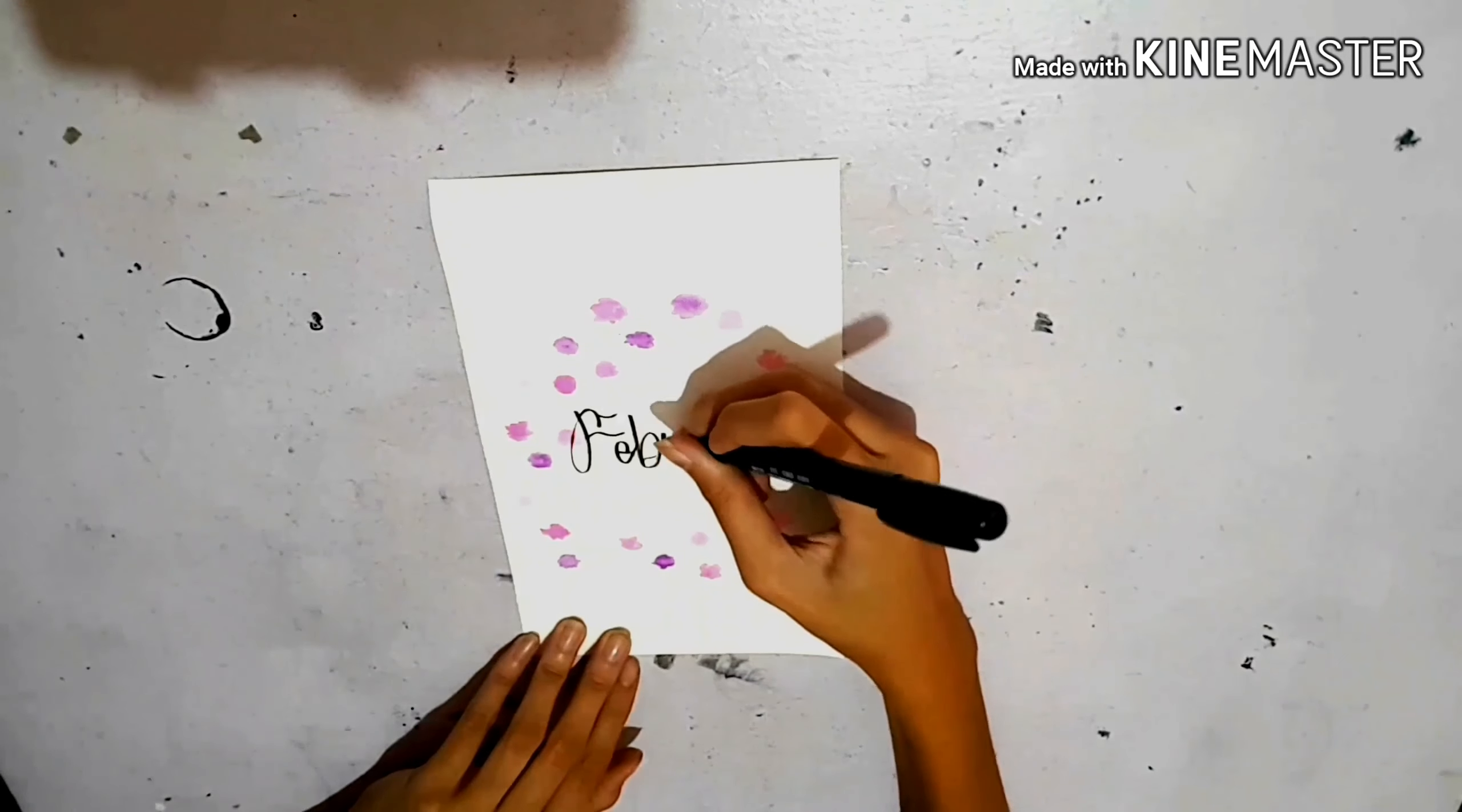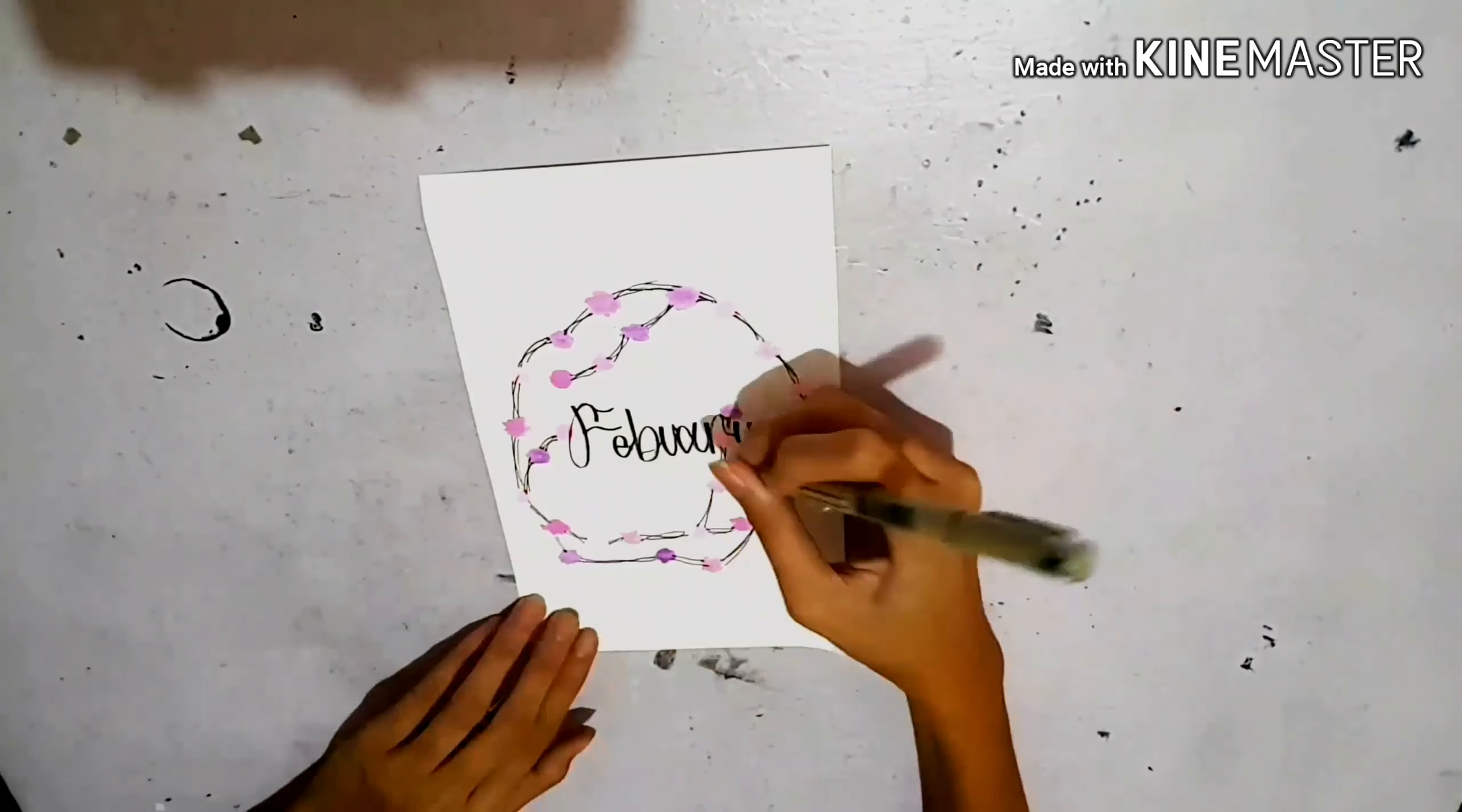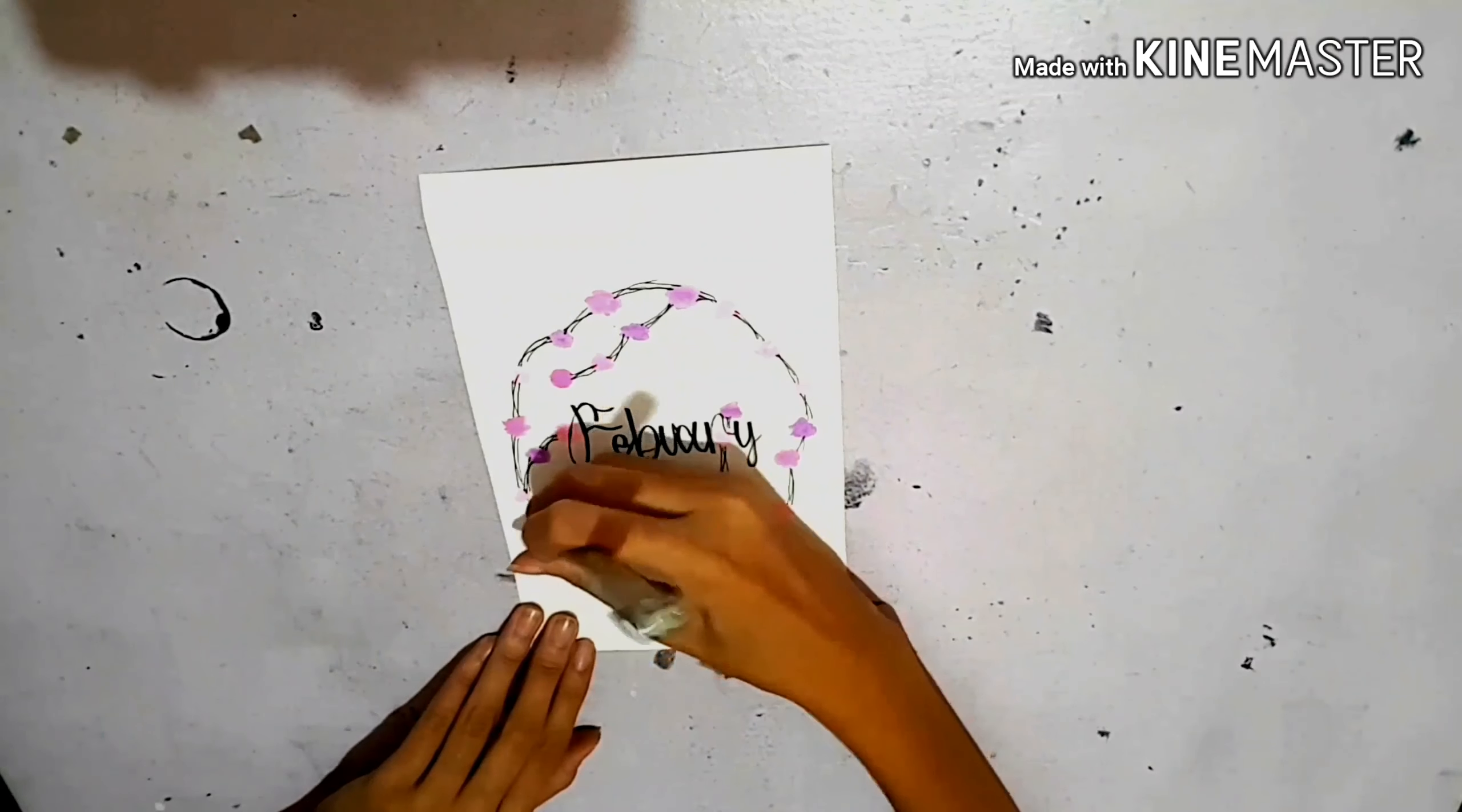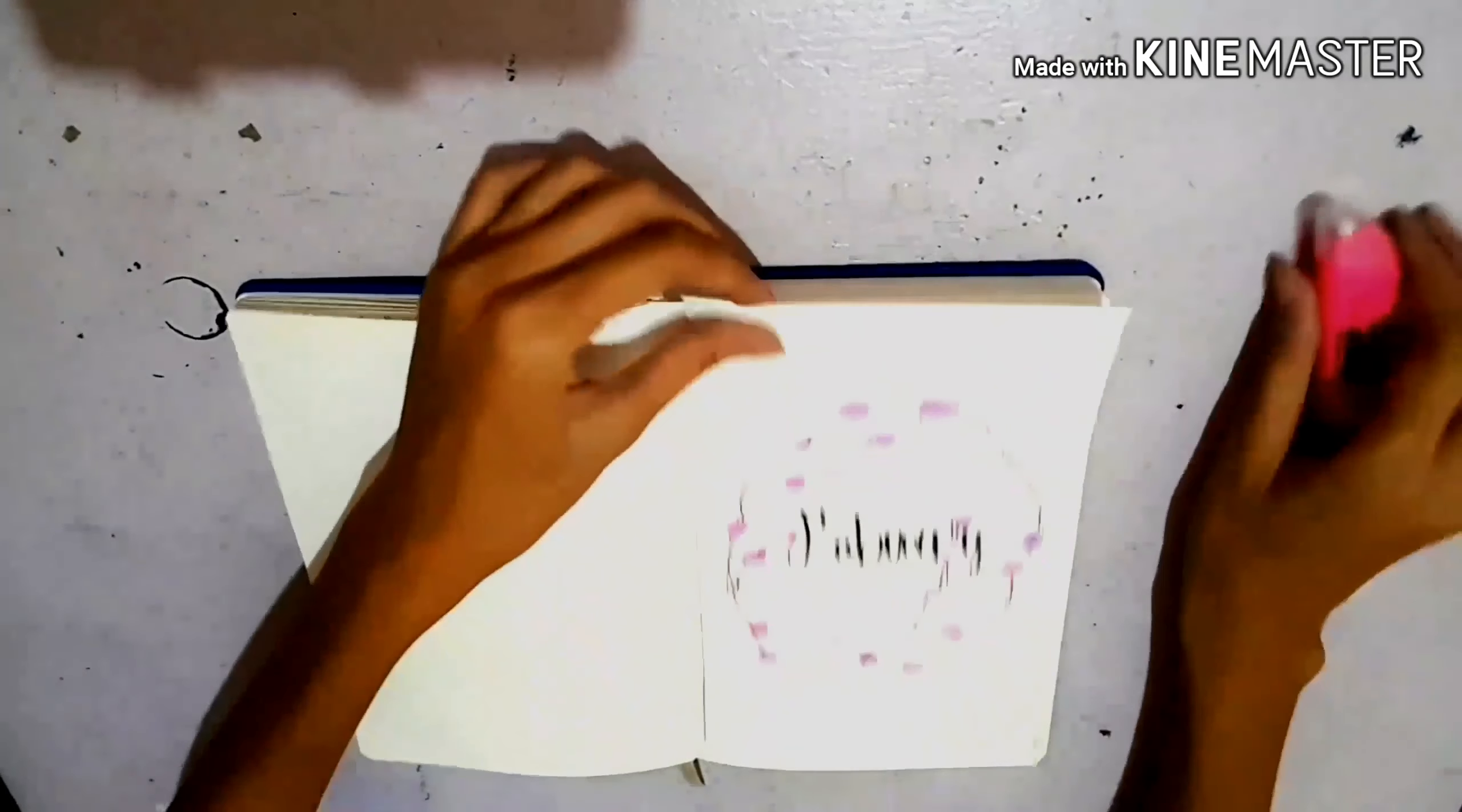I'm taking my Pigma Micron and just connecting those dots that I painted on earlier to make them look like a wreath of flowers. I am taking that once dry and pasting it in the cover page of my month of February.